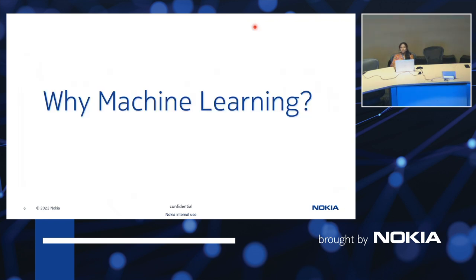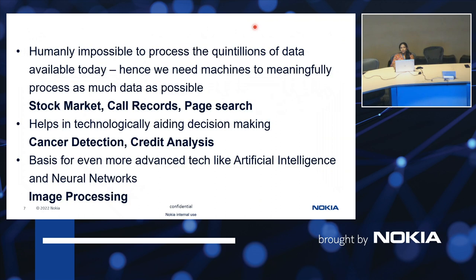Why do we need machine learning? We have a lot of data available today. For example, in the stock market, we can discover the future value of a company's stock. For call records and pay searches, a lot of data can be processed. It also helps in decision making like cancer detection and credit analysis. Neural networks enable image processing where you can remove noise from images.